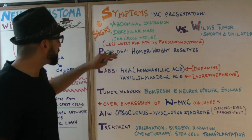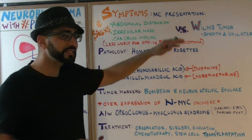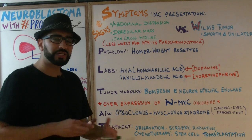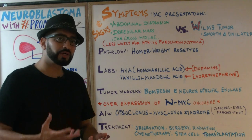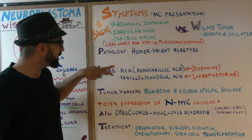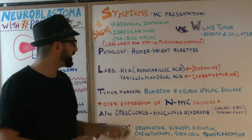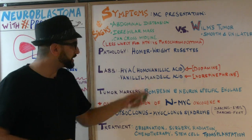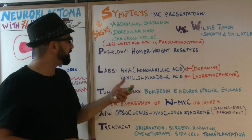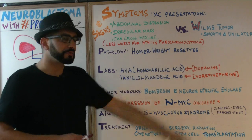A few pathology points to memorize: you will see Homer Wright rosettes on histology. On labs, just like in pheochromocytoma, breakdown products show up in the urine. The two key ones are HVA — homovanillic acid, a breakdown product of dopamine — and vanillic mandelic acid, a breakdown product of norepinephrine.